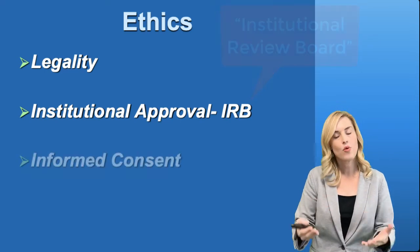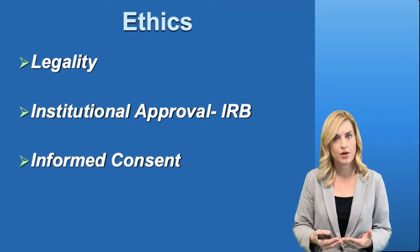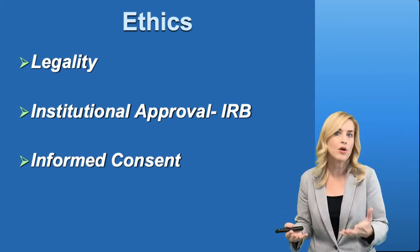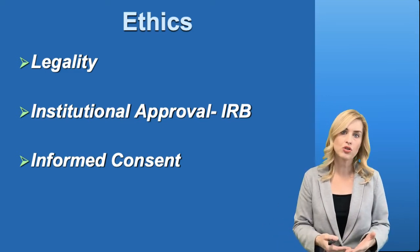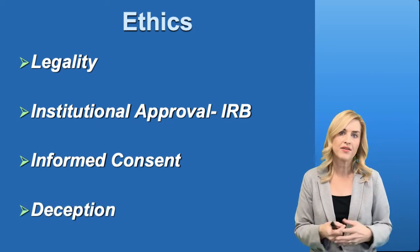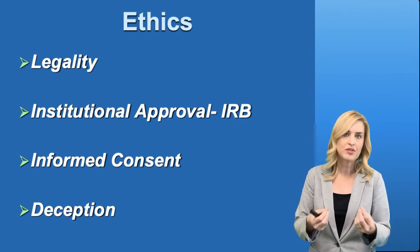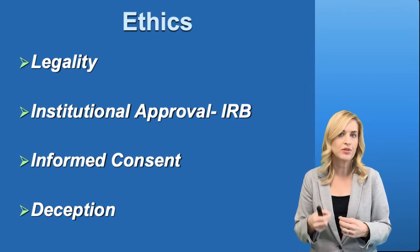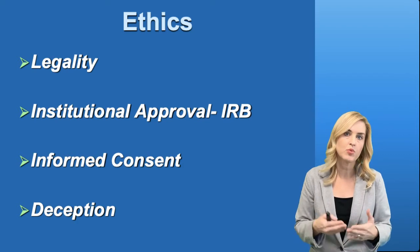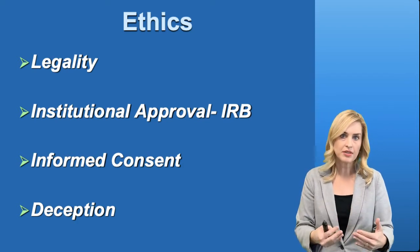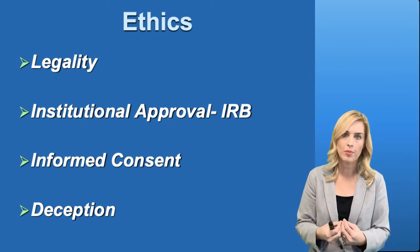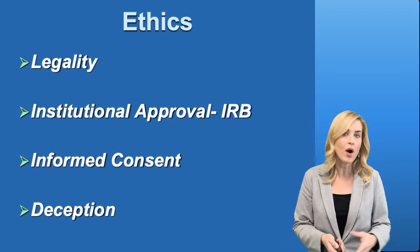We also have to provide informed consent to the participants that are in our study. Our participants need to know what is going to happen and what the possible outcome and ramifications for their participation are in our studies. We also have to be careful about deception. We are going to go through a lot of studies in this class where we have used some deception. Deception can only be used as a last resort. We try to do anything besides deception, but there are times when it does need to be used. Often if we use deception, then we have to come at the end of the study and actually have a debriefing. This is where we actually talk to our participants and explain what happened and why we deceived them.